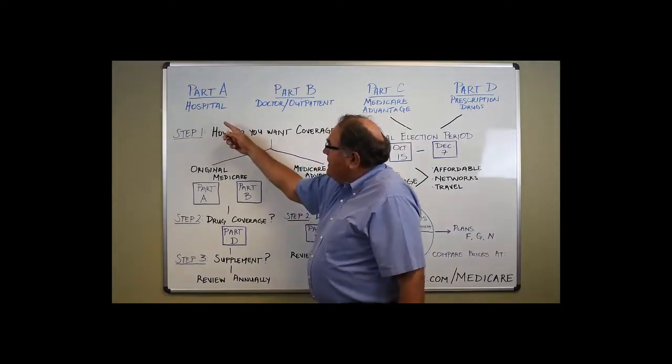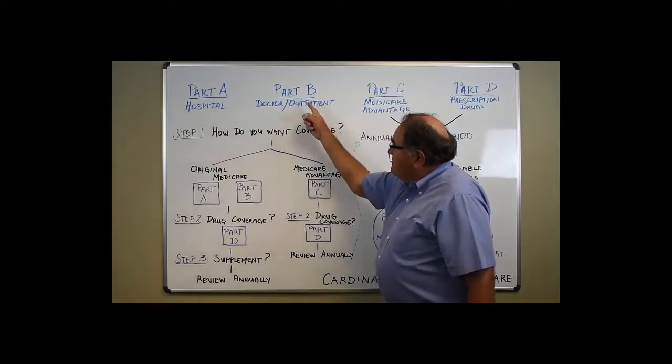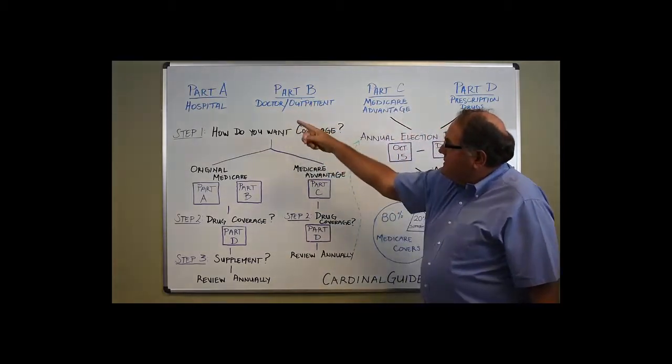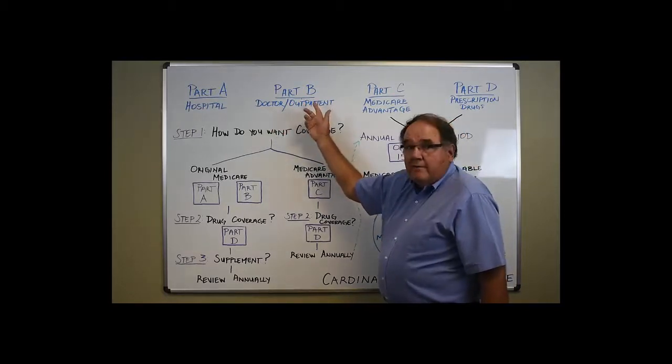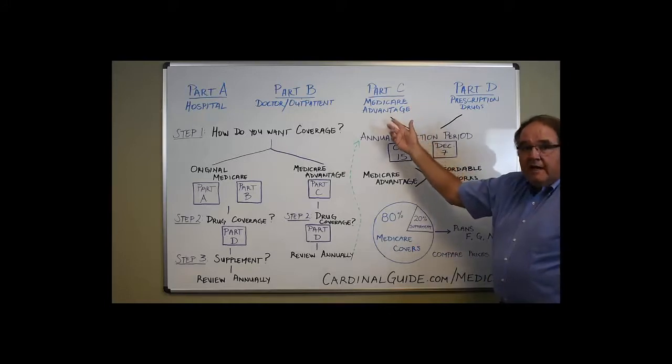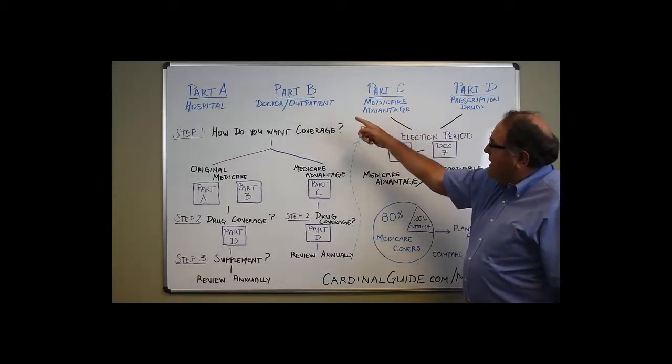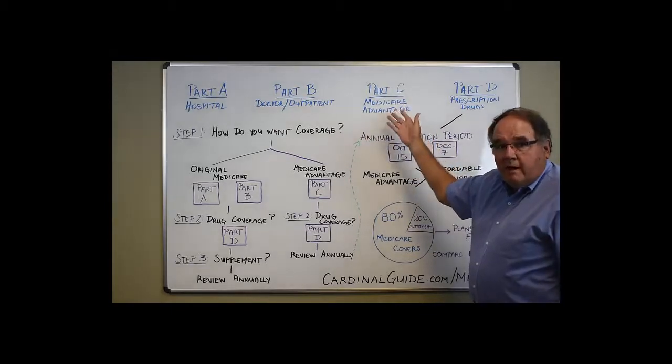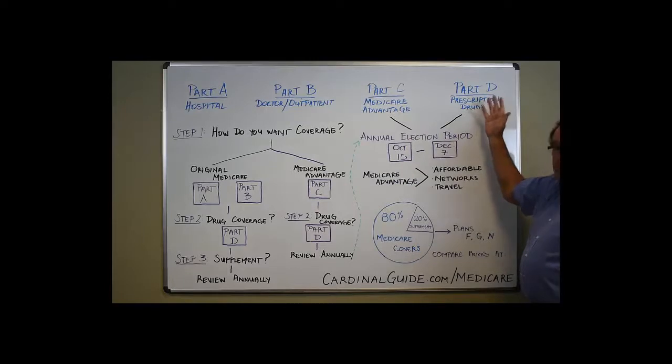So we've got Part A of Medicare, and Part A covers your hospital bill. Part B of Medicare, which is separate and distinct, covers everything that's not hospital, your doctor and outpatient. Part C of Medicare is your Medicare Advantage plans, where you're actually getting your Medicare Part A and B from a private Medicare insurance company. And then Part D is your prescription drugs.